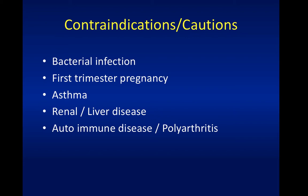Intravenous iron should be avoided in the first trimester of pregnancy, as with most medications. Asthma is listed as a caution, though many stable asthmatics without a strong history of drug reactions have received IV iron without problems, and there is some literature supporting this. Other cautions listed in the drug insert include active autoimmune disease, active inflammatory conditions, and renal and liver disease - although in practice most patients with chronic renal impairment receive intravenous iron as part of their erythropoietin therapy.